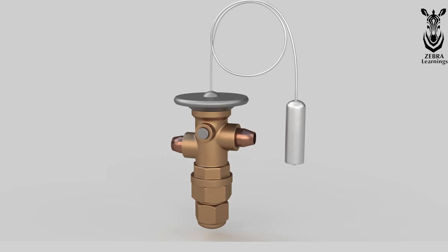This is the thermal expansion valve. This is the inlet, through which the refrigerant enters. It is the outlet, through which the refrigerant goes out. This is the main body, inside which there is a spring.